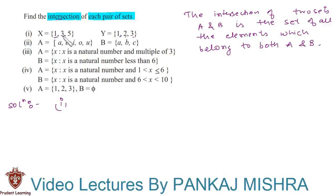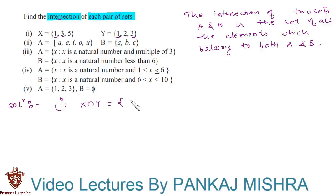In the first section, 1 and 3 are common to sets X and Y. Therefore, X intersection Y is a set containing elements 1 and 3.